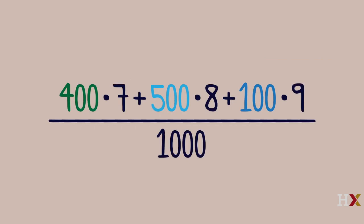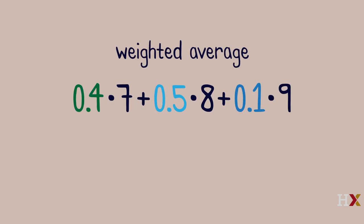The simple average of these outcomes can be written as a weighted average of the possible scores. The weights, 0.4, 0.5, and 0.1, are non-negative numbers that add up to 1. Each score is weighted based on the fraction of time it occurred in the sample.